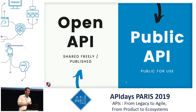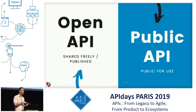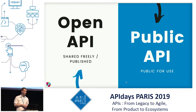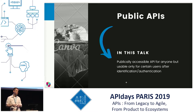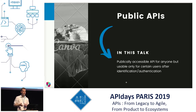There are two kinds of approaches for APIs. You have open APIs that are shared and freely available online, and then you have public APIs. In this talk, a public API is something available for use — anyone that has access to this API. This may depend on their authentication or authorization.